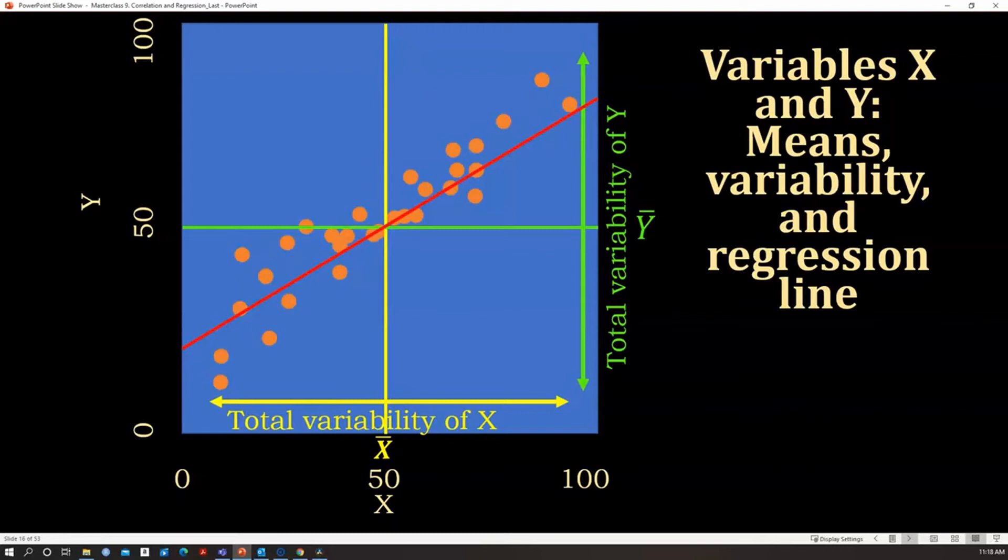So, of all the possible lines that have to go through that point, the regression line is the line that minimizes the distance, the total distance, of the observations represented by the orange dots in here, and that line.